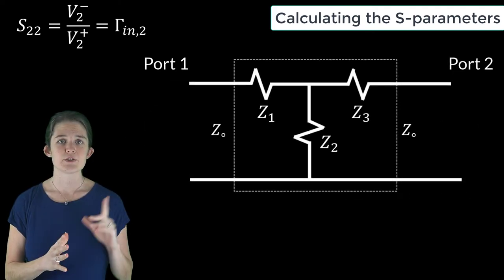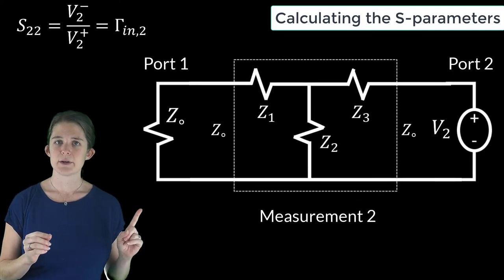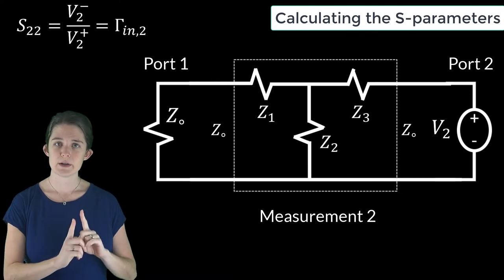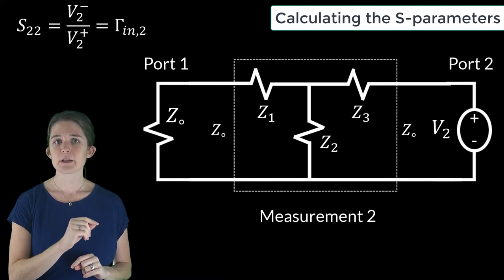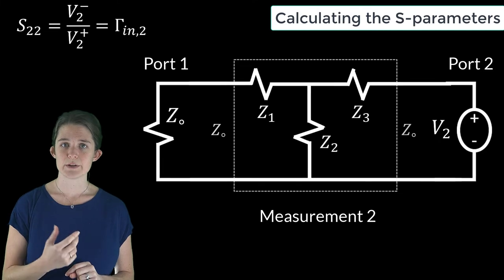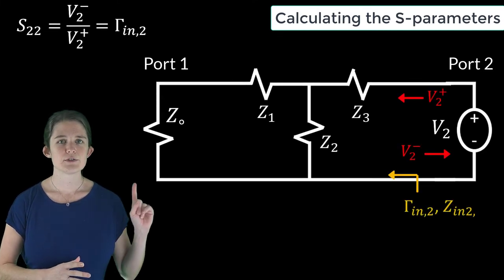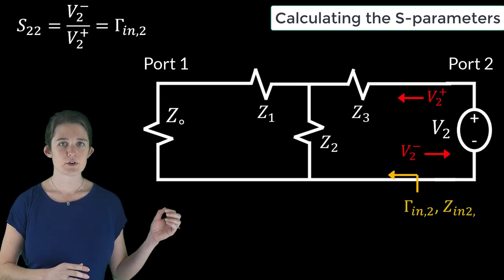The second measurement setup is shown here. Now the input is at port 2 and port 1 is matched terminated. This will give us both S22 and S12. Again, S22 is going to be equal to the reflection coefficient looking into port 2.